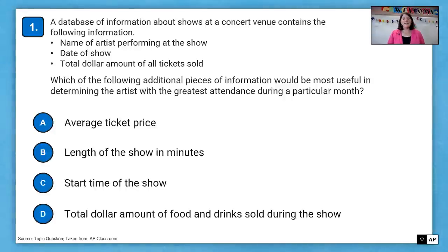First question. A database of information shows at a concert venue contains the following information: the name of the artist performing at the show, the date of the show, and the total dollar amount of all tickets sold. Which of the following additional pieces of information would be most useful in determining the artist with the greatest attendance during a particular month?